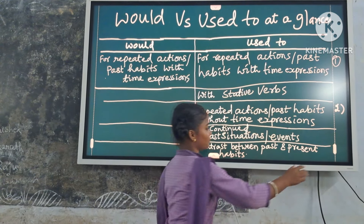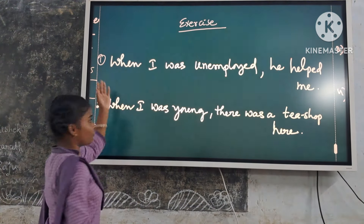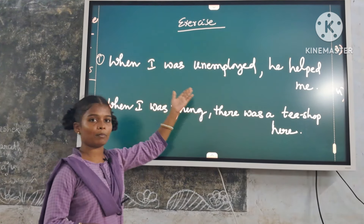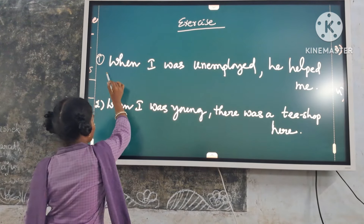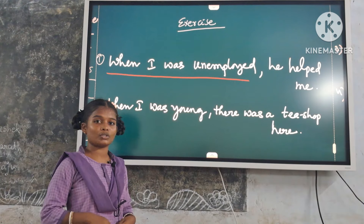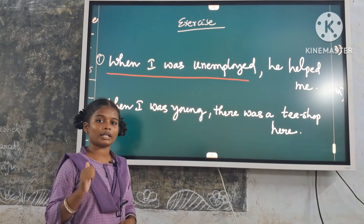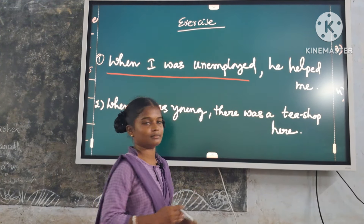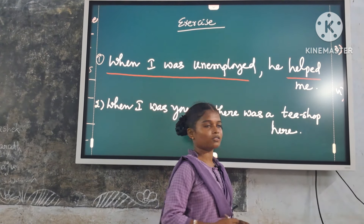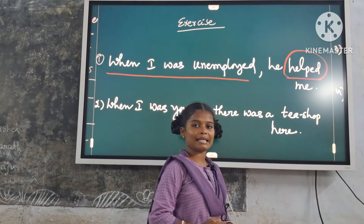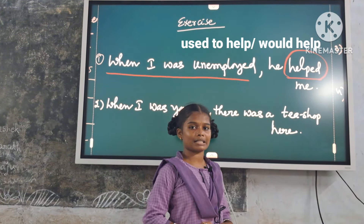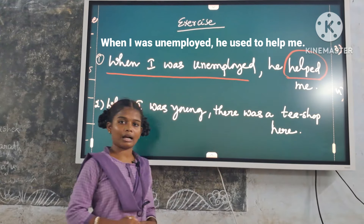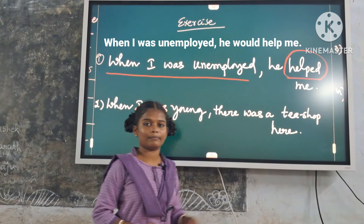First example: 'When I was unemployed, he helped me.' Here, 'when I was unemployed' is a time expression. So we can use both 'used to' or 'would'. Underline the verb in the main clause: 'helped'. Replace it with 'used to help' or 'would help'. Answer: 'When I was unemployed, he used to help me.' Or: 'When I was unemployed, he would help me.'